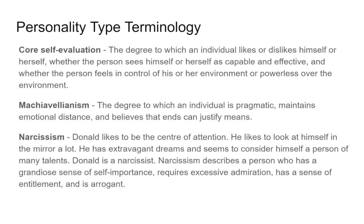Machiavellianism — Machiavelli was a writer of many years ago, and Machiavellianism relates to the degree to which an individual is pragmatic, maintains emotional distance, and believes the ends can justify the means. Donald Trump kind of occupies this territory: I'm going to do what I need to do, let's cut to the job and get it done. That may be beneficial in some environments but not in others, particularly if you need to get consensus. Machiavellianism is really good for one-man-show operations where you're the king of the castle.